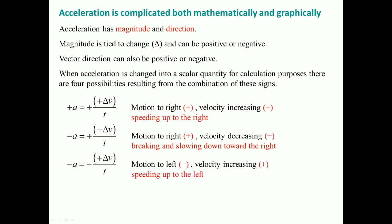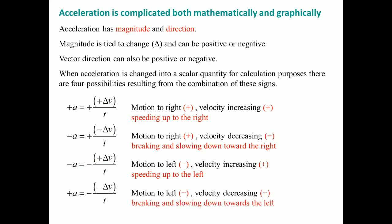What about driving left and pressing the accelerator? Your velocity is increasing — you're speeding up to the left. But if you're moving left and applying the brakes, you're slowing down. A negative acceleration times a negative velocity gives a positive result. These are the four different possible scenarios.